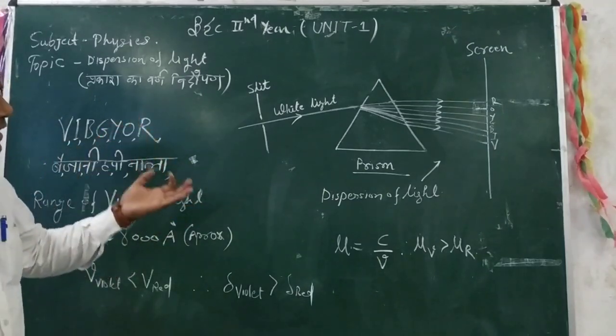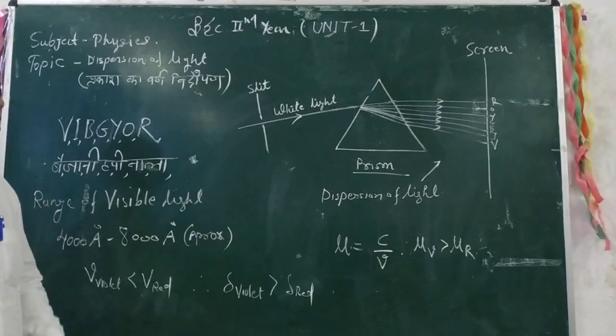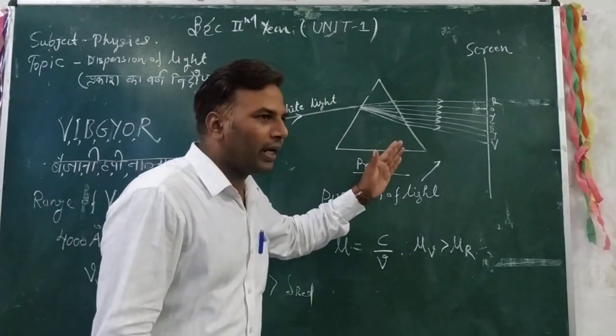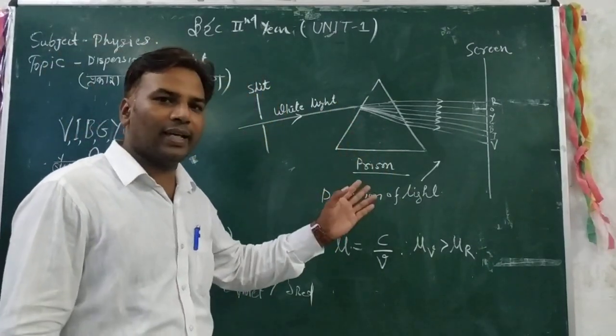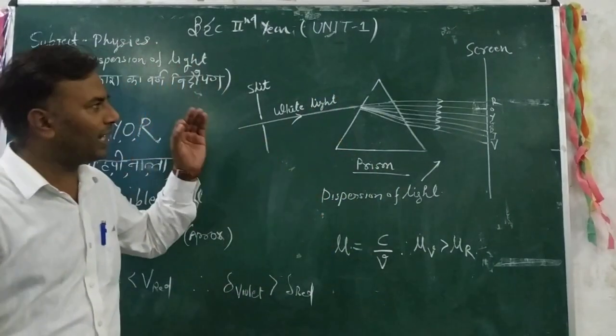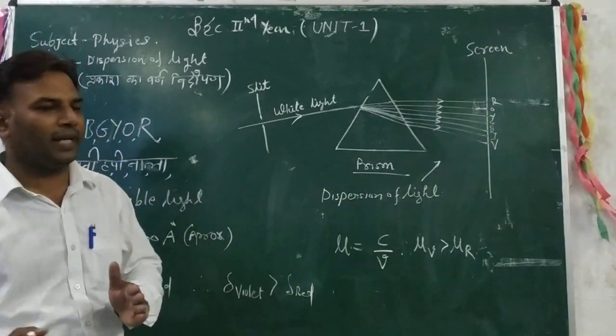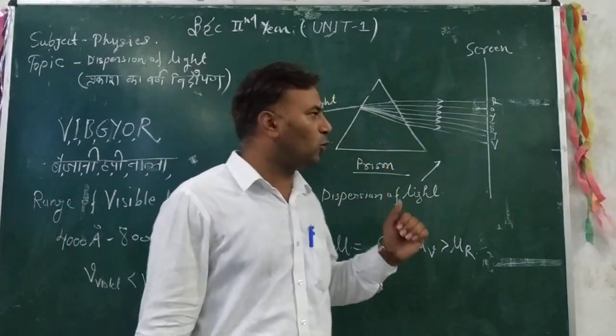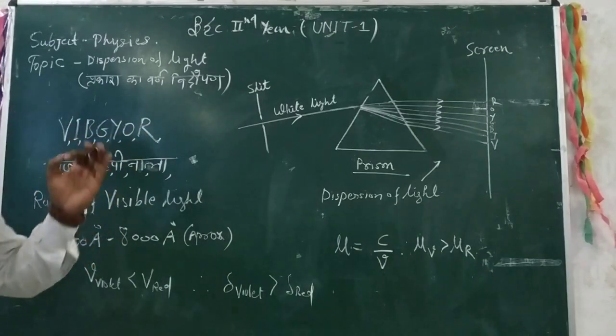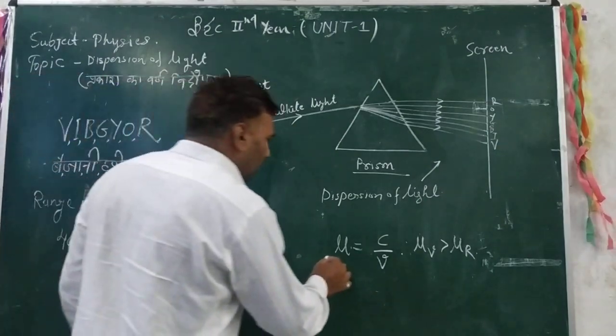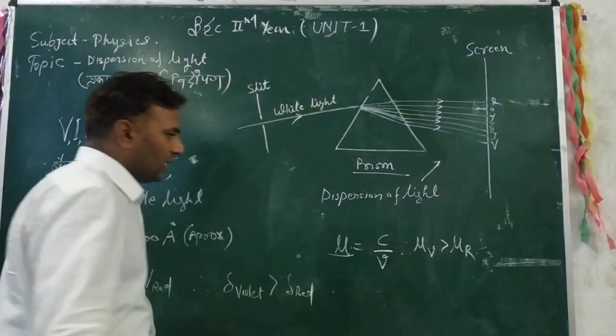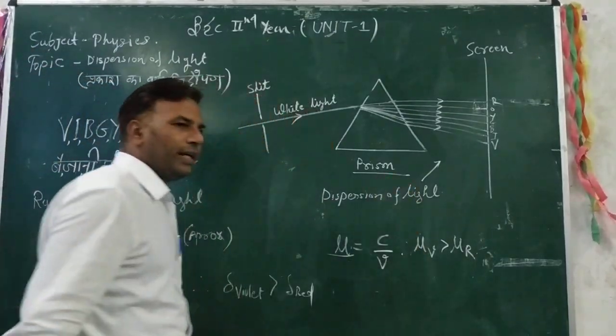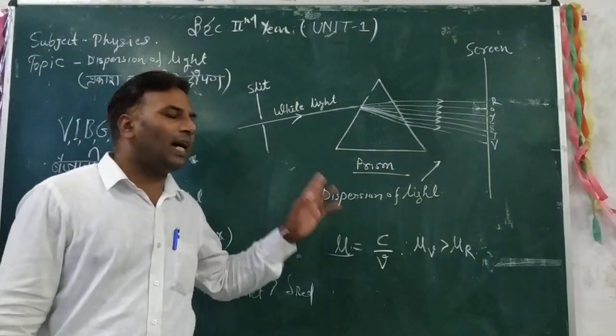We can say that white light in the prism has different refractive indices for different colors. That's why the prism bends each color differently compared to the refractive index, which deviates from its actual path. If we take all the colors on the screen, then we can see the colors on the screen. This is the angle of bending. We know that refractive index is denoted as C upon V.